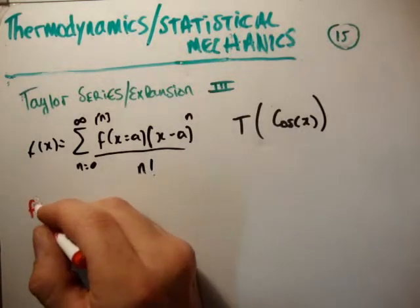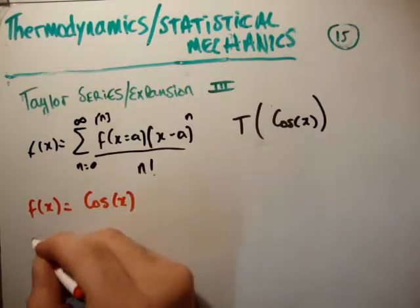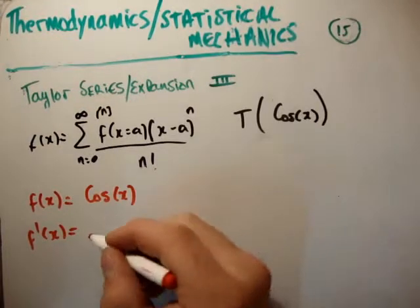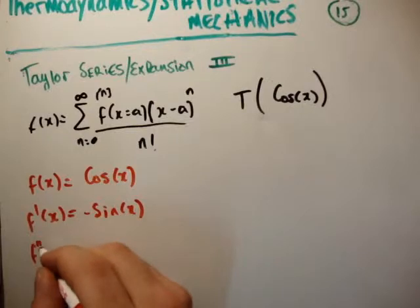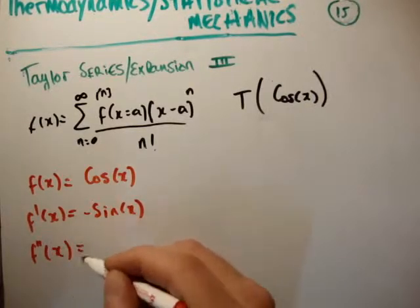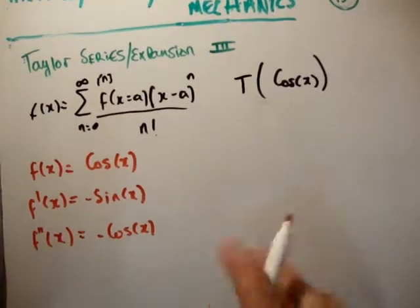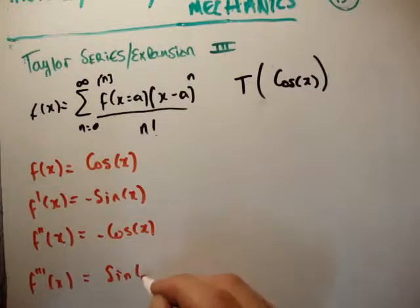So we'll say f(x) is equal to cos x. We know that f'(x) is equal to -sin x. We know that f''(x) is equal to -cos x. We know that f'''(x) is equal to plus sin x.